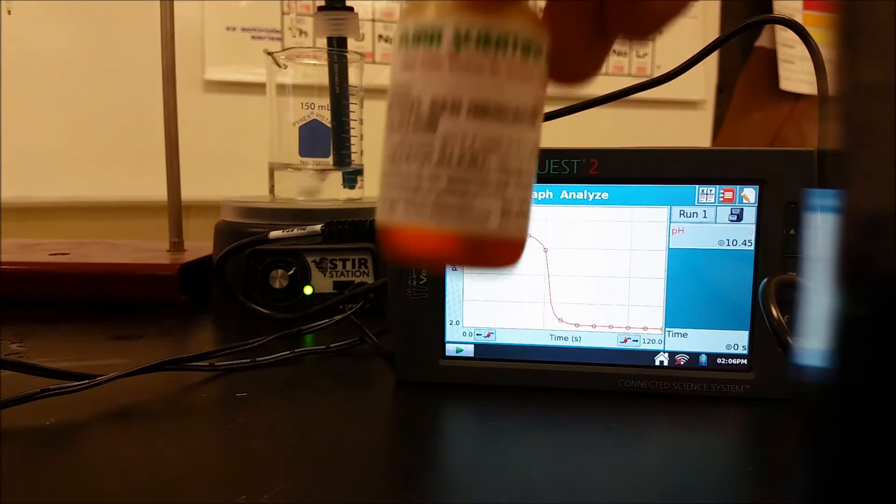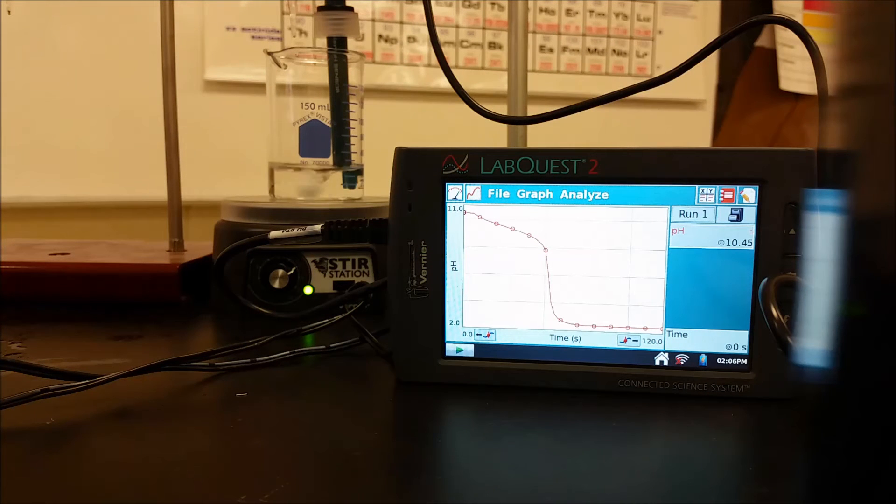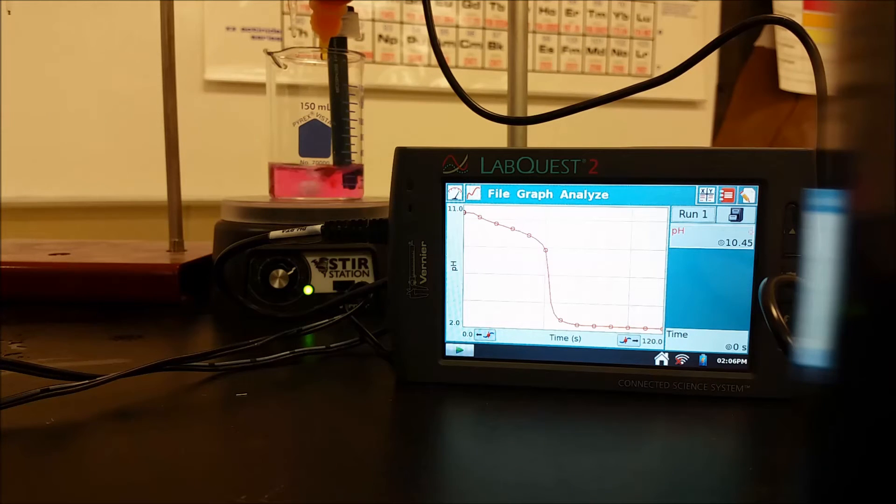Here I'm going to take an acid-base indicator called methyl red and I'm going to add it to a weak acid solution of acetic acid. Acetic acid is 0.1 molar, it's 10 milliliters, and then I've diluted it a little bit with some distilled water to fully cover the pH meter.